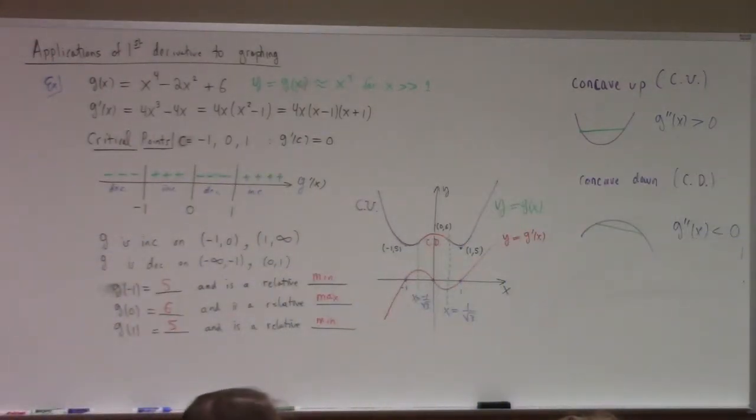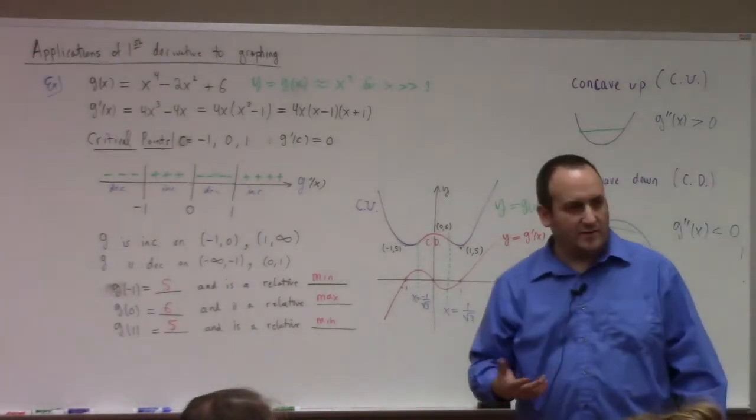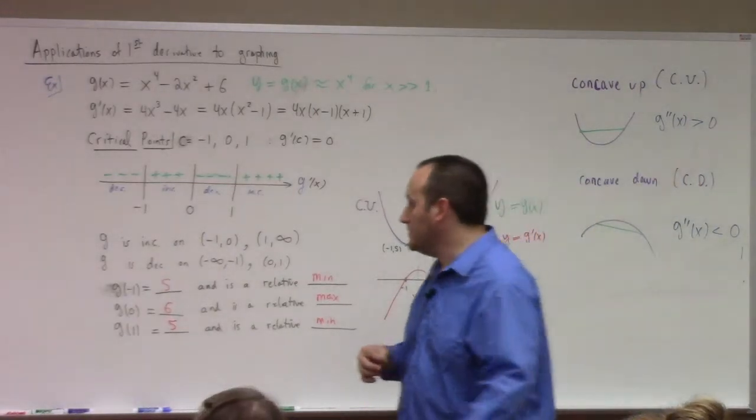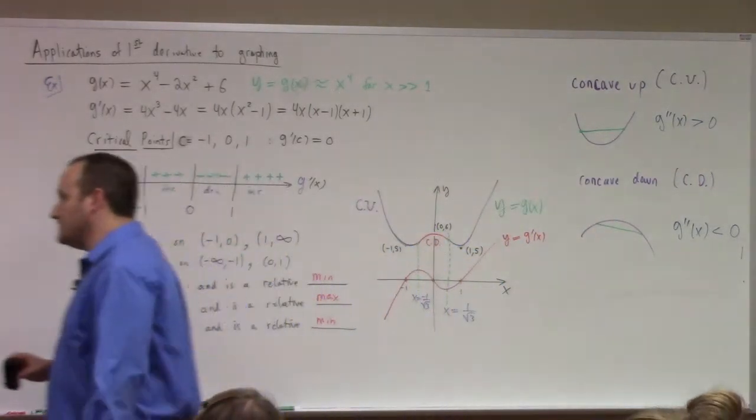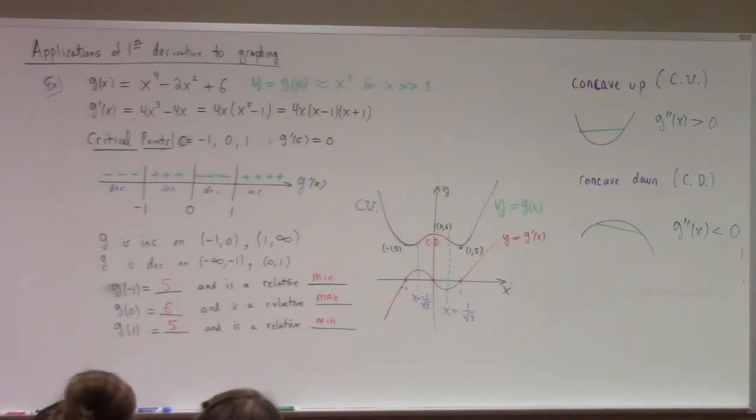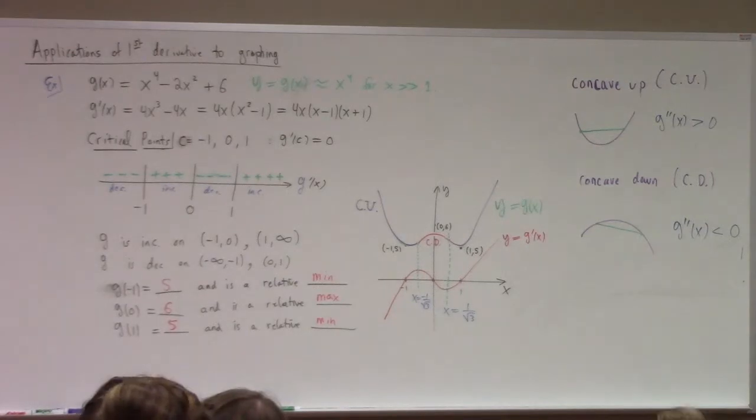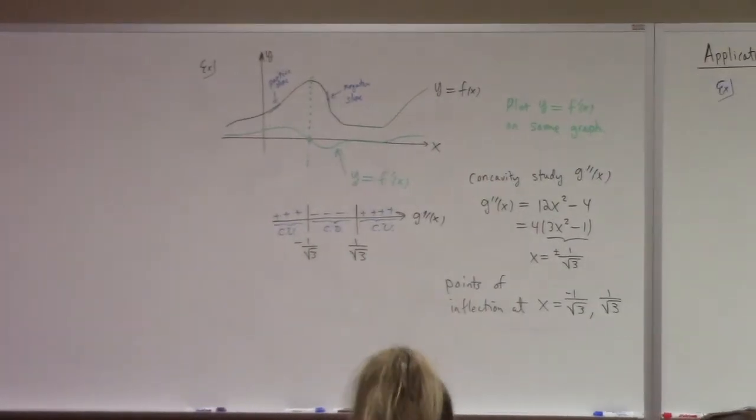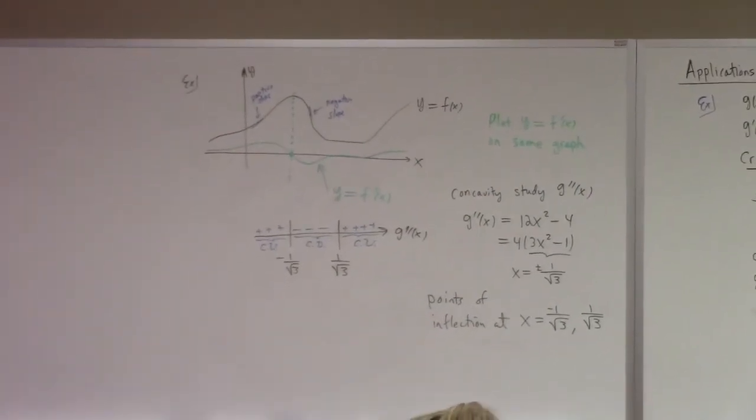Now, there's another question you guys should have asked me that is important to ask, because so far my examples are somewhat misleading. Every single time that we've had a critical point, it's been a relative min or a max. That doesn't have to happen. Okay? Let me show you an example. Can I erase? Did we get all this? We're good? You gotten everything? We're good? Okay.